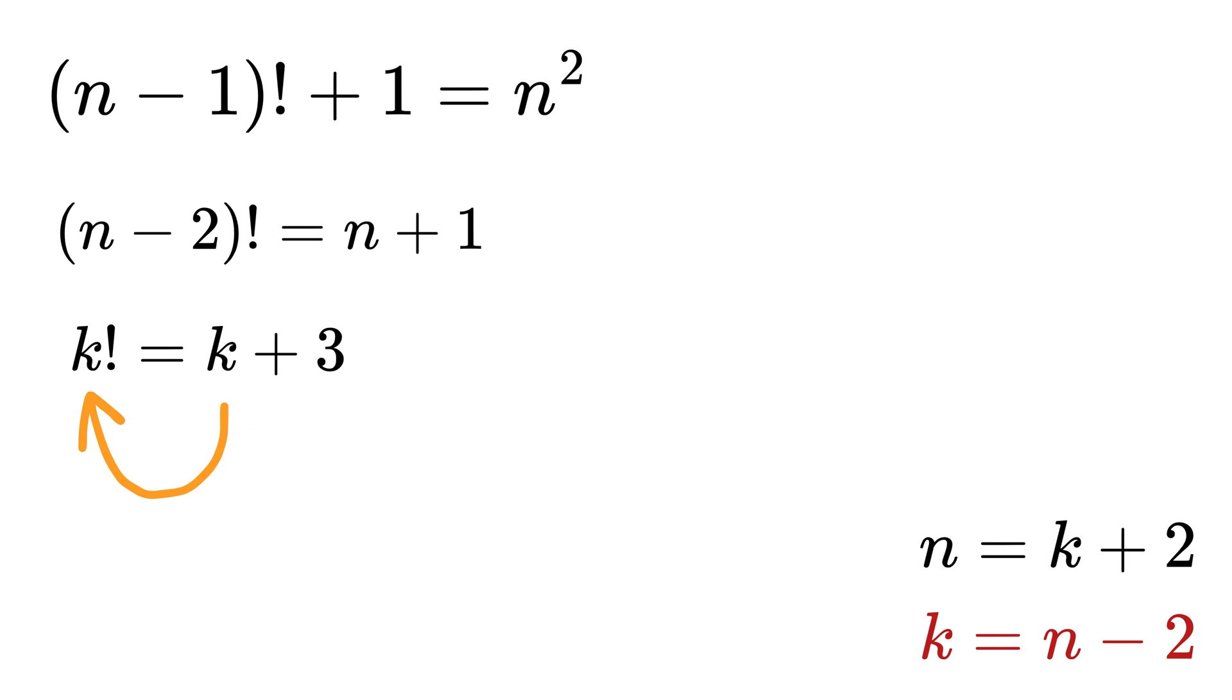Now, take this k on the left-hand side to get k factorial minus k equals 3, and then write this k factorial as k times k minus 1 factorial. Take k as common from here to get k times k minus 1 factorial minus 1, and this equals 3.